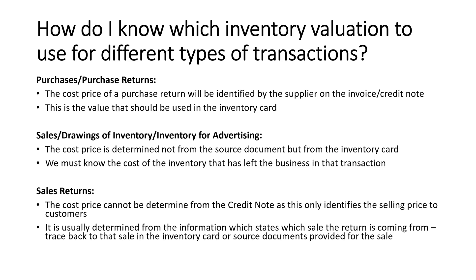So how do I know which inventory valuation to use? We look at things like our documents, and it actually depends on the kind of transaction. For purchases and purchase returns, the cost price of inventory will be stated on those source documents — from the invoice and from the credit note. For sales, drawings of inventory, and inventory for advertising, we might not necessarily have the cost price written there, because on a sales invoice we wouldn't put the cost price of items, as that would tell our customers how much we're marking it up.